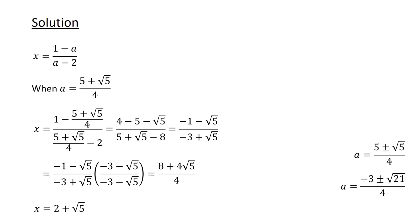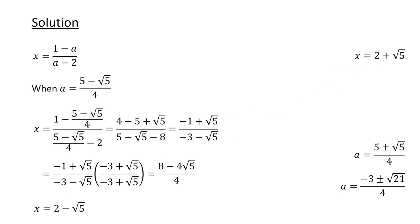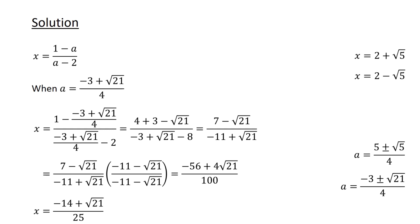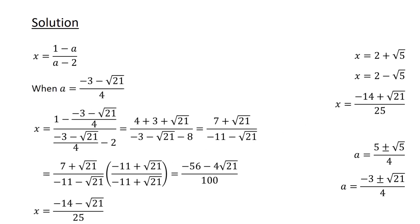Substituting a equals 5 plus root 5 over 4, we obtain our first solution: 2 plus root 5. Substituting a equals 5 minus root 5 over 4, gives us our second solution: 2 minus root 5. Substituting a equals minus 3 plus root 21 over 4, gives us x equals minus 14 plus root 21 over 25. Substituting a equals minus 3 minus root 21 over 4 gives our last solution: minus 14 minus root 21 over 25.